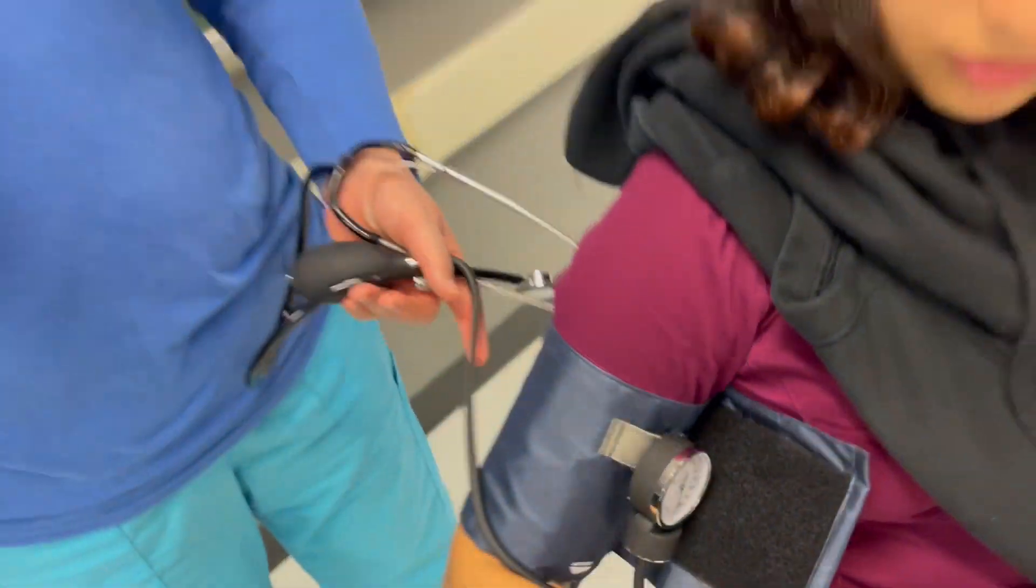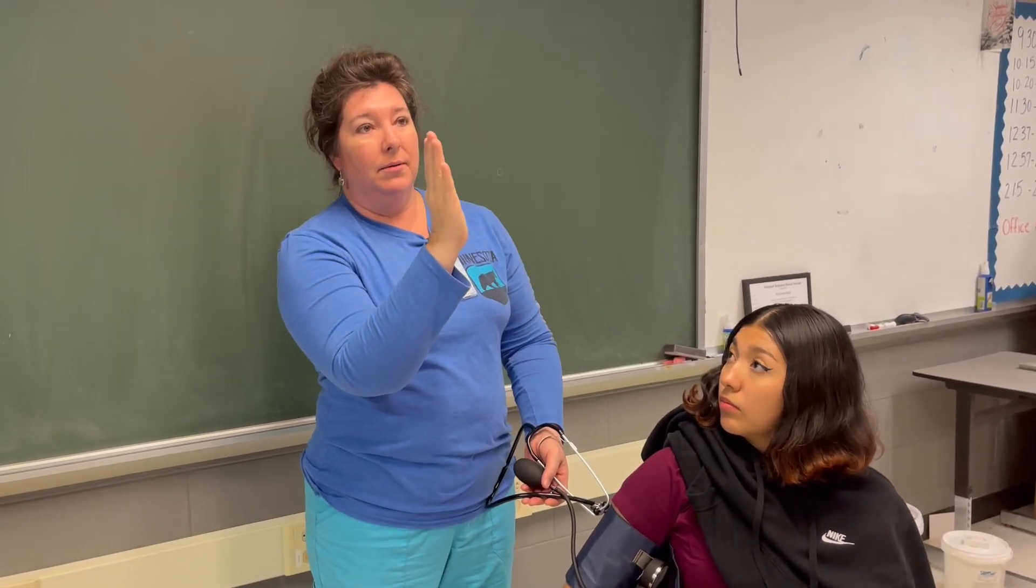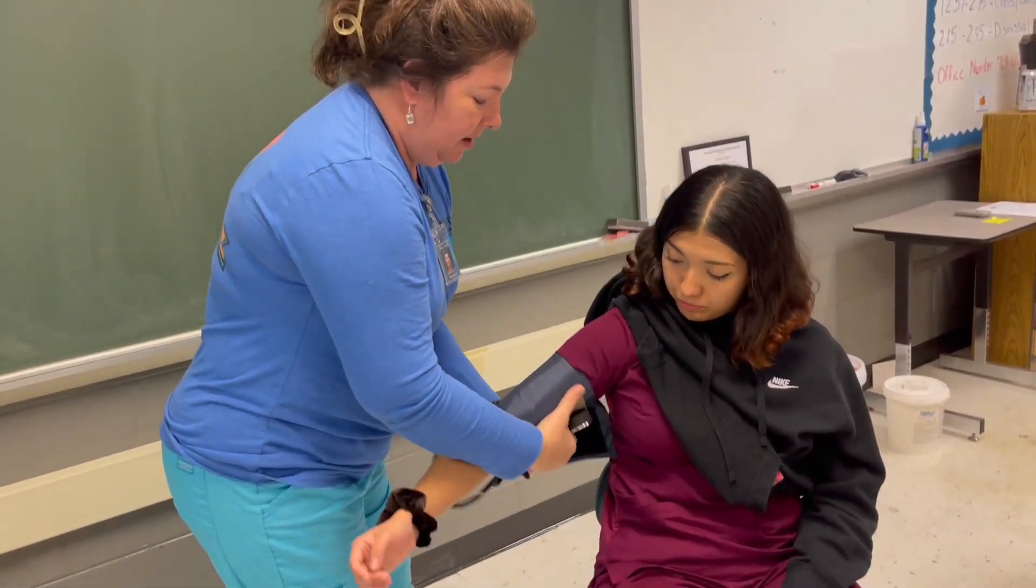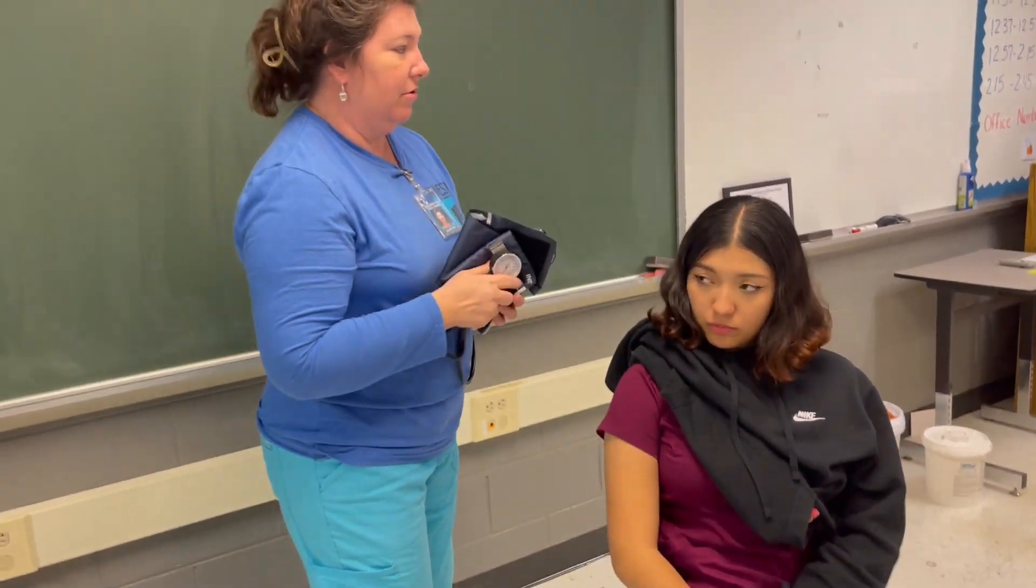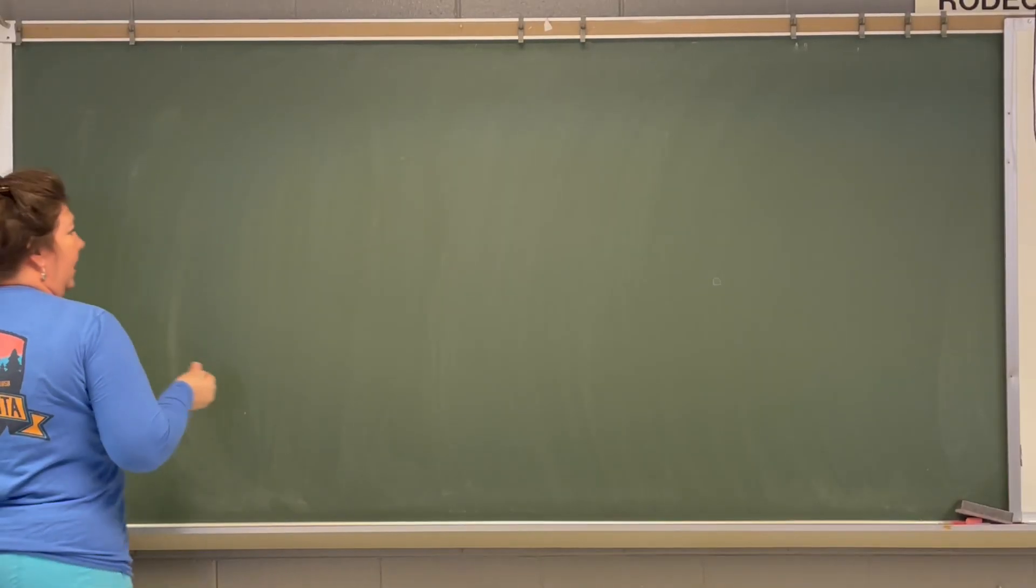And then, as it went, it went bump, bump, bump, bump, bump, bump, bump. As soon as you hear that last strong bump, that is your lower number. So, you have your systolic number and your diastolic number. And I'm going to come over here on the board and go over that. Thank you, sweetie.